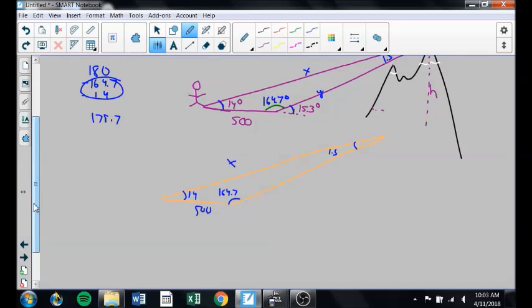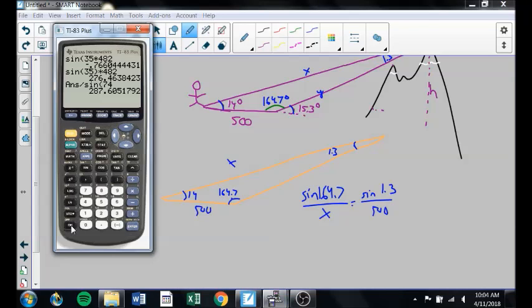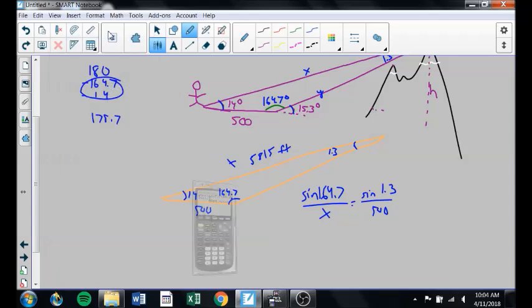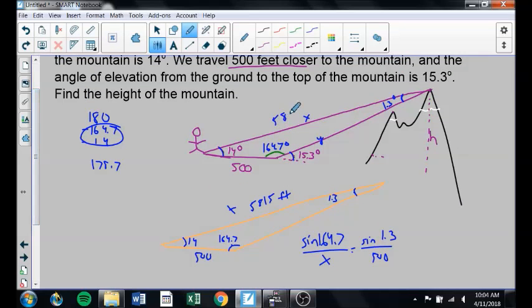Well, now this is a law of sines. I can do the sine of 164.7 over x with this angle side pair. And I'll do this angle side pair. Equals the sine of 1.3 over 500. Solve that for x. So sine of 164.7 times 500 divided by the sine of 1.3 gets me 5815. This whole length here is 5815 feet. A little over a mile. I'm going to go back up here. This is now 5815 feet.